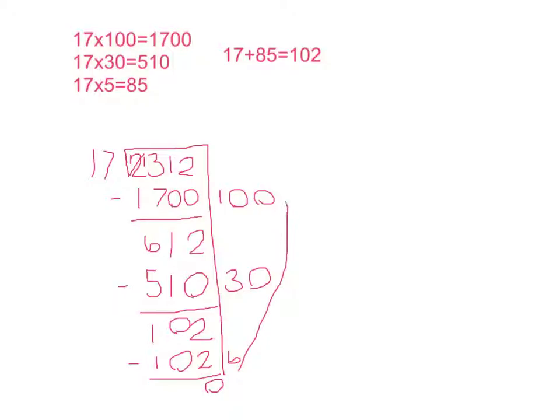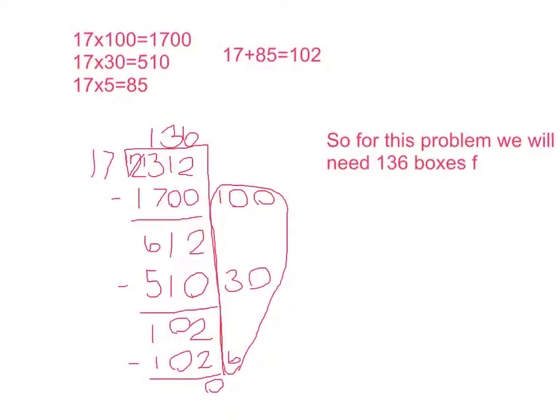When I'm done that I'll add up all these numbers. And I will get 136. So for this problem we will need 136 boxes for all the cookies.